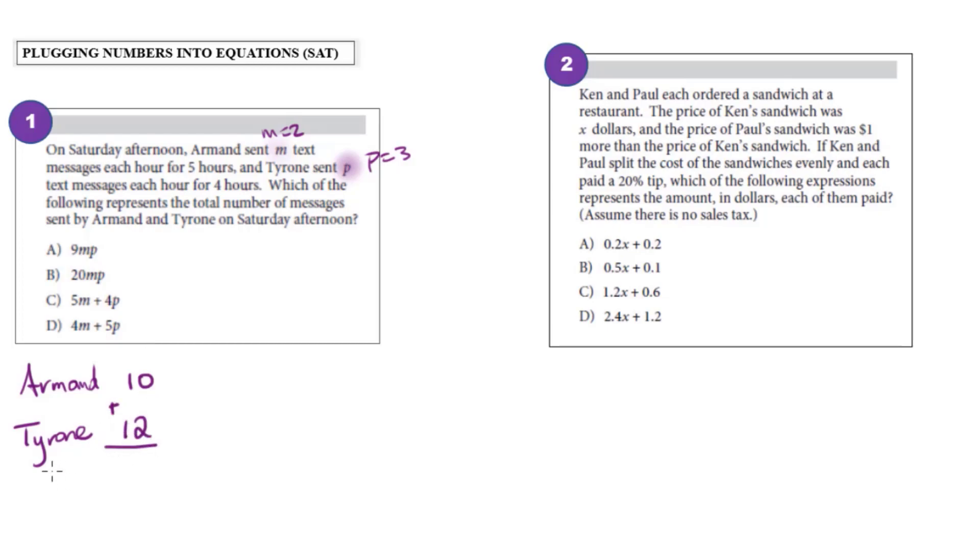So overall, in total, they would have sent 22 messages. Now that I know that, all I need to do is compare each of my options to see which one of them would give me 22, since my options should represent the total number of messages sent.